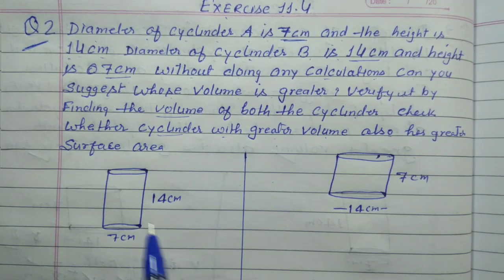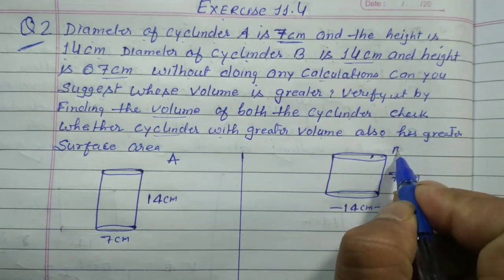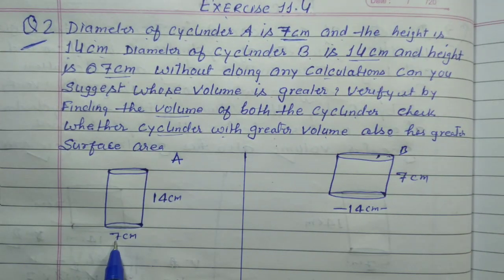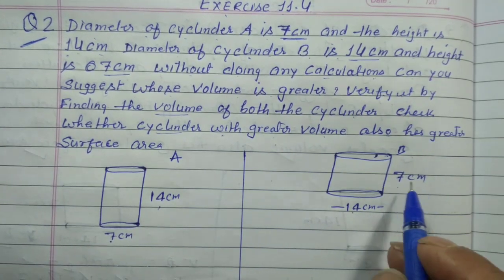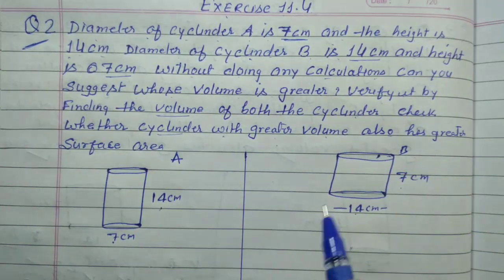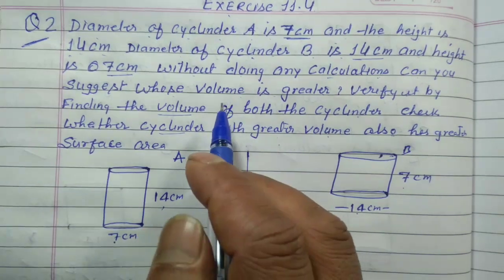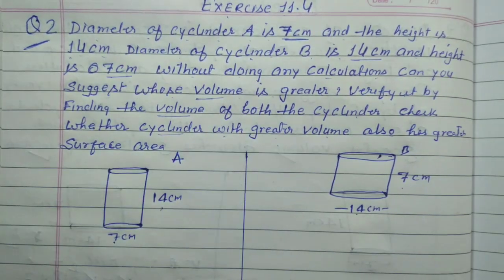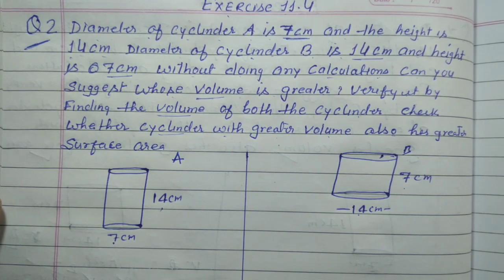हमारे पास दो cylinder A और B हैं। यह A है, यह B है। A का diameter 7 है, height 14 है। B की diameter 14 है, height 7 है। तो हमें बिना calculation के suggest करना है कि किसका greater volume होगा। फिर हमें find out भी करना है कि किसका greater volume होगा, और क्या जिसका greater volume होगा उसका surface area भी greater होगा।